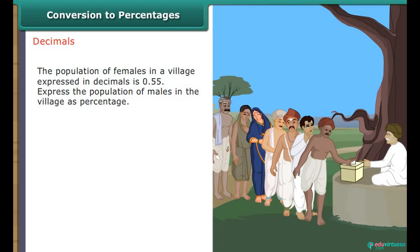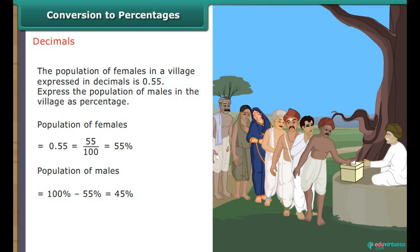The population of females in a village expressed as a decimal is 0.55. Express the population of males as a percentage. Population of females equals 0.55, which equals 55 upon 100, which is 55%. Population of males equals 100% minus 55%, which equals 45%. Males in the village form 45% of the total population.